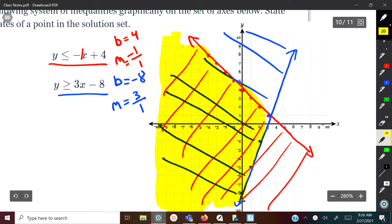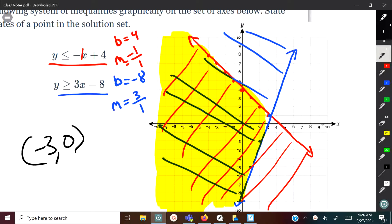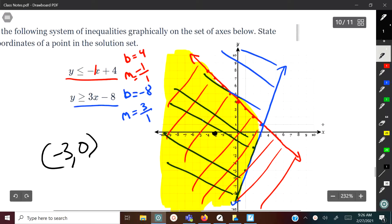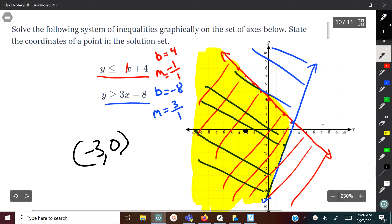Any point that you pick inside the solution can be your answer. So you can pick any point here. So I'm just going to pick, let's see, negative three, zero. So negative three, zero would work as one of the points. I picked this point right here, but you could pick any point within the part where it overlaps. And that's the solution to your systems of inequalities.